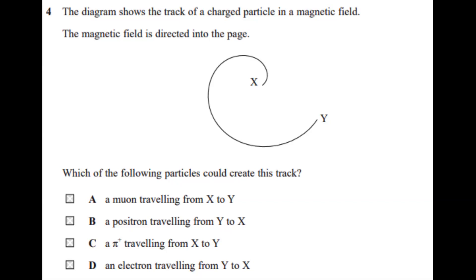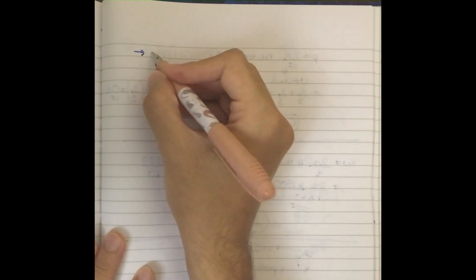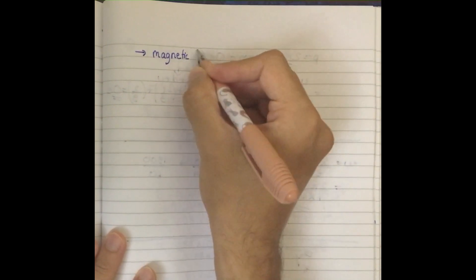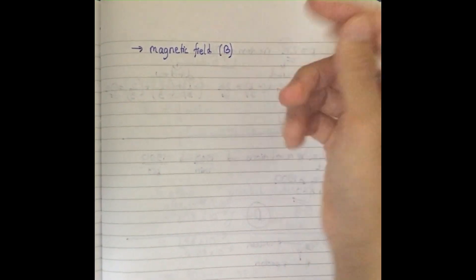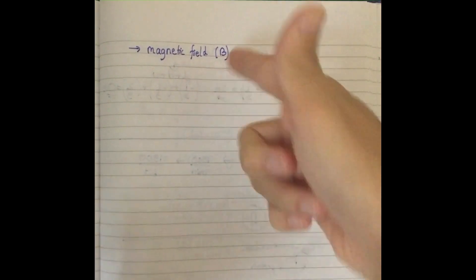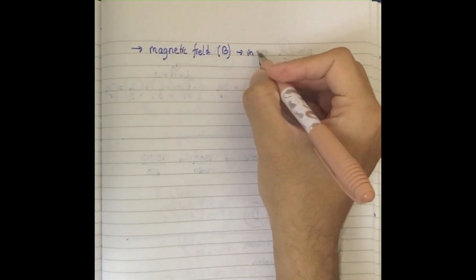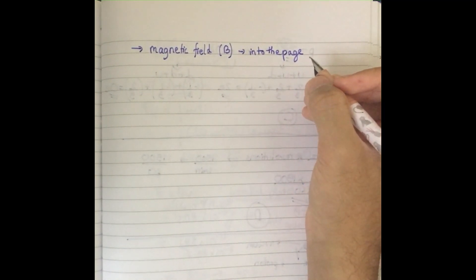The diagram shows the track of a charged particle in a magnetic field. The magnetic field is directed into the page. We have options given, and we can only solve this by working through them.